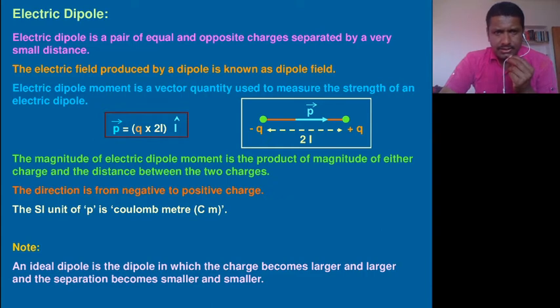Another next slide is electric dipole. Electric dipole is a pair of equal and opposite charges separated by a very small distance, and which is shown in this diagram here.